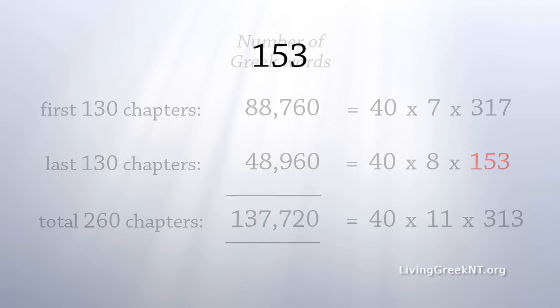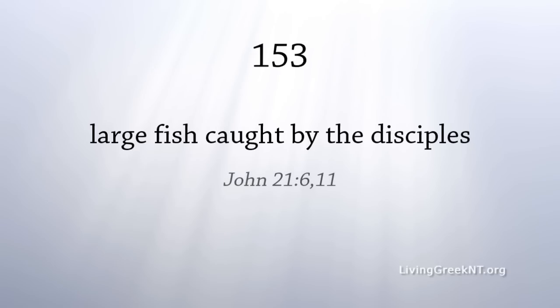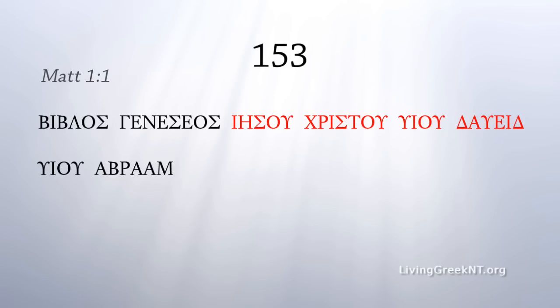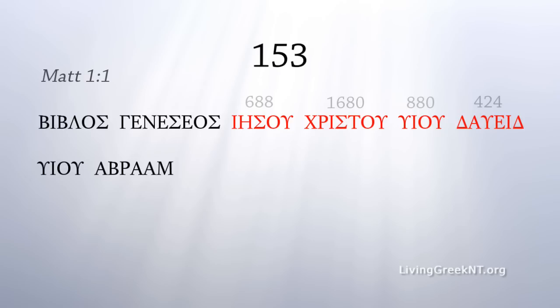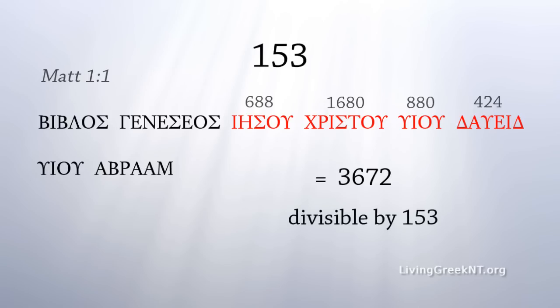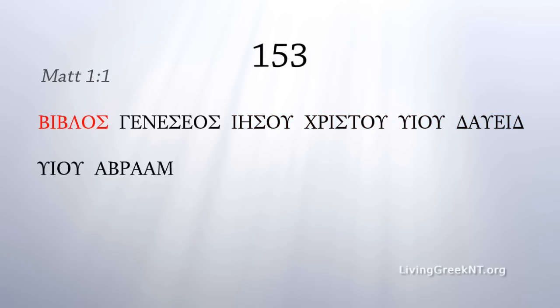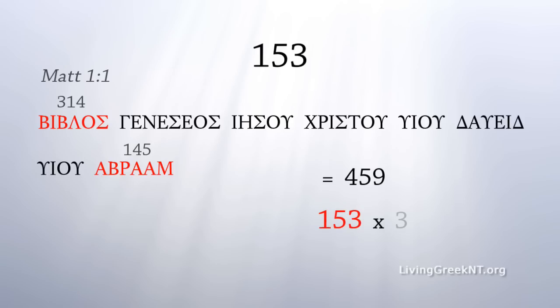This number: 153. 153 is the number of large fish caught by the disciples when they followed Jesus' instructions. The number of fish, 153, is literal and specific, but surely also symbolic. In the eight words of Matthew 1:1, the four middle words are Jesu Christu Viu David — Jesus Christ, Son of David. Their numeric value is 3672, and this number is divisible by 153. Also, the first and last words are Biblos and Avraham — 314 plus 145 — with a combined numeric value of 459, which is 153 times 3.